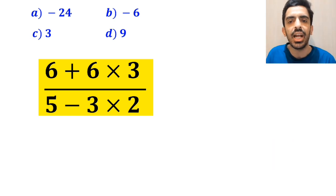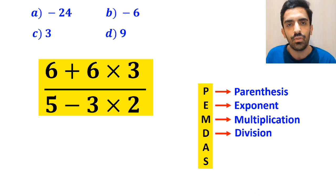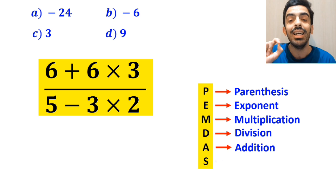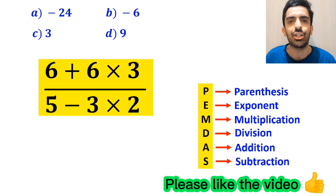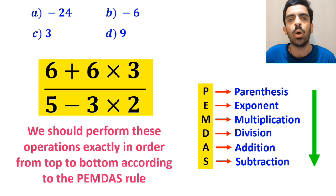To solve this question, we need to follow a rule that is called PEMDAS. In this rule, P stands for parentheses, E stands for exponent, M stands for multiplication, D stands for division, A stands for addition, and S stands for subtraction. We should perform these operations exactly in order from top to bottom according to the PEMDAS rule.